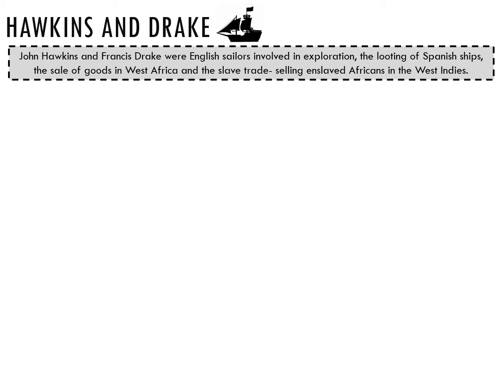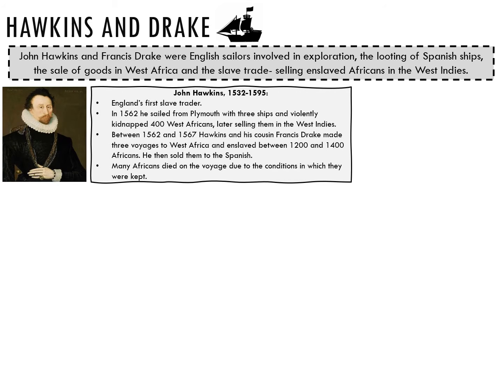These were English sailors involved in exploration, the looting of Spanish ships, the sale of goods in West Africa, and the slave trade selling enslaved Africans in the West Indies. The slave trade involving West Africa and the West Indies was known as the triangular trade. Those involved made huge profits from selling kidnapped people into slavery, as well as from the sugar and tobacco produced on slave plantations. John Hawkins was England's first slave trader.